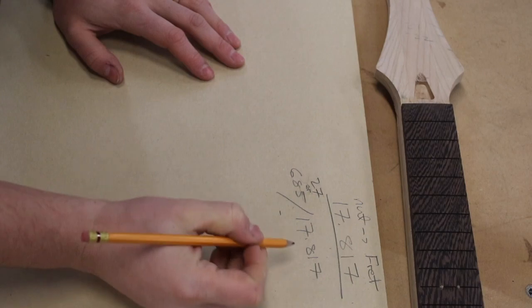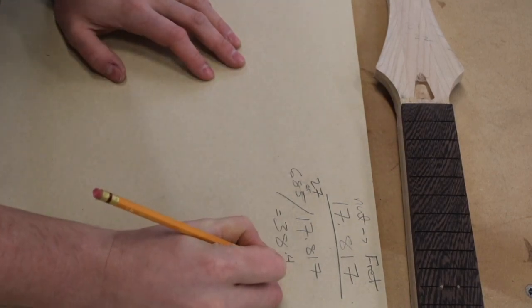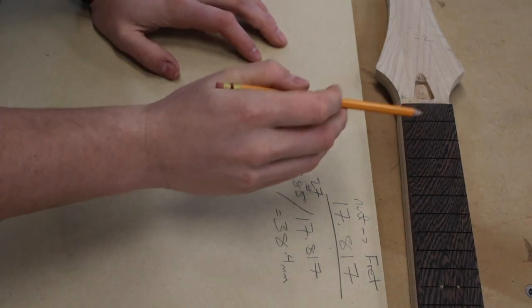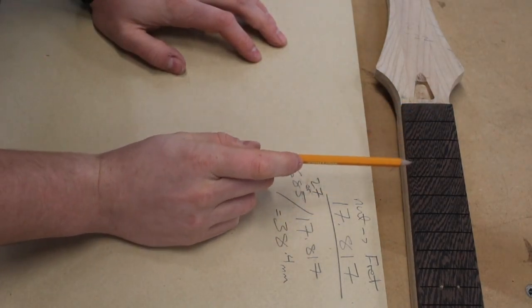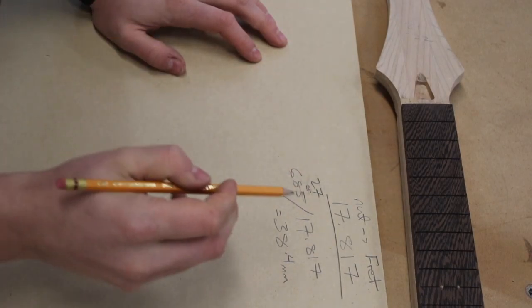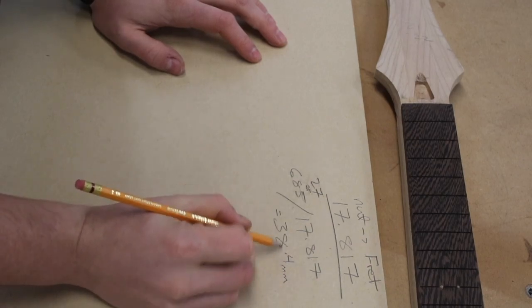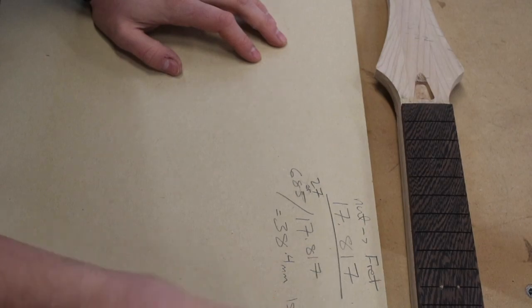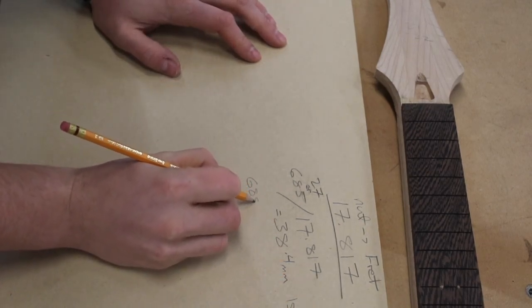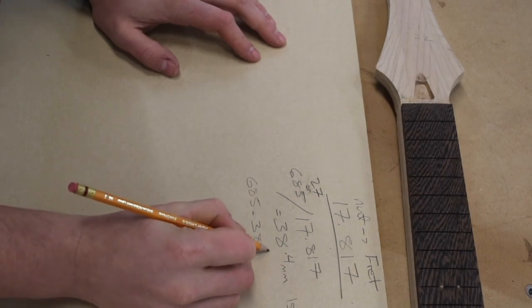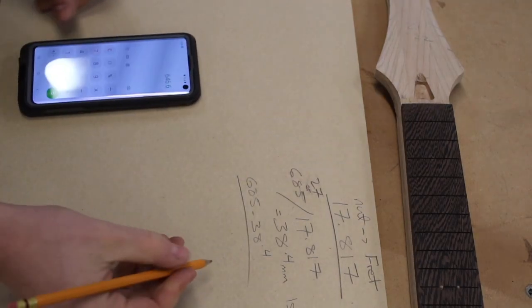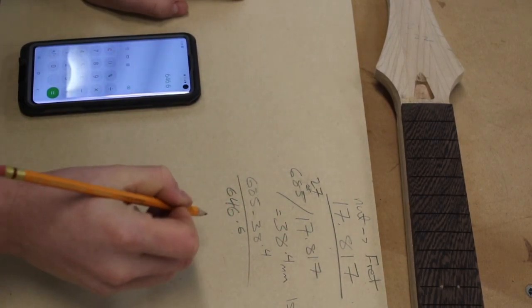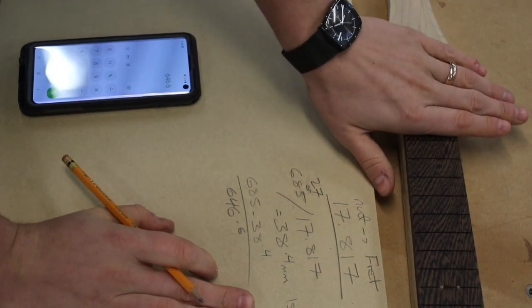Take the overall scale length, divide it by 17.817, again the magic number, and you end up with a number of 38.4. So that is the distance from the fingerboard to the first fret. Now how do I calculate the distance from the first fret to the second fret in this? Now that's pretty simple. All you do is take away the distance of your initial calculation, 38.4, from the overall scale length. So that's the first fret to the nut, of course, and then 685 minus 38.4. So that gives you a new scale length of 646.6. So that's my new scale length, because I am calculating how much I've reduced by the first fret.